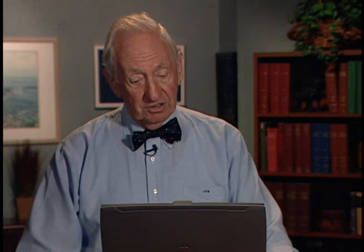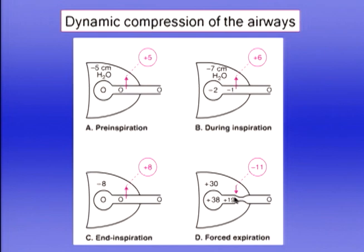Dynamic compression of the airways is exaggerated in COPD for three reasons. First, resistance of the small airways is increased, so pressure is lost more rapidly moving toward the mouth. Second, in COPD the difference between alveolar and intrapleural pressure is less because the lung is more compliant due to architectural destruction. Third, the airways are not held open by the radial traction of the surrounding lung parenchyma, making them more liable to collapse.